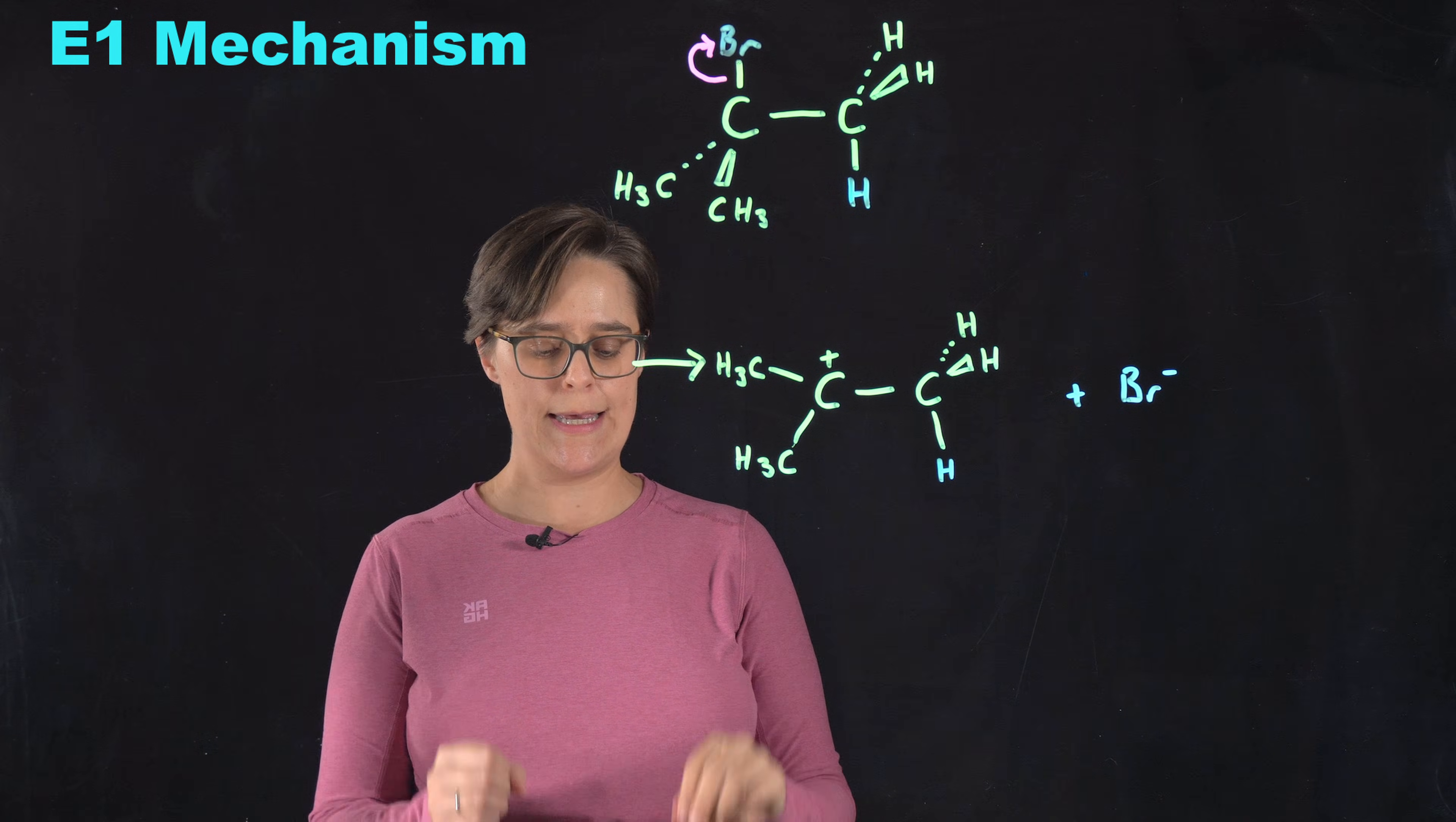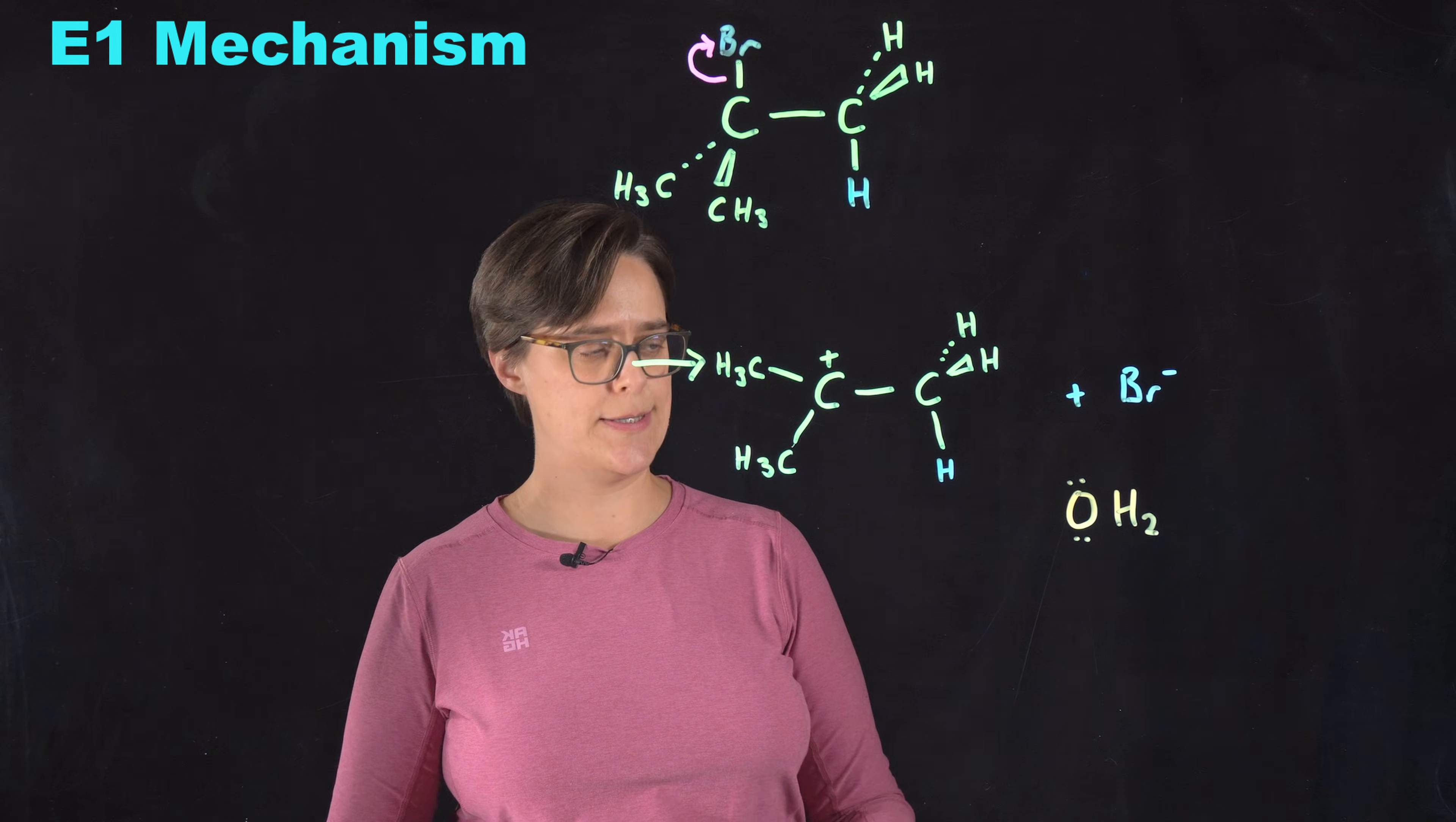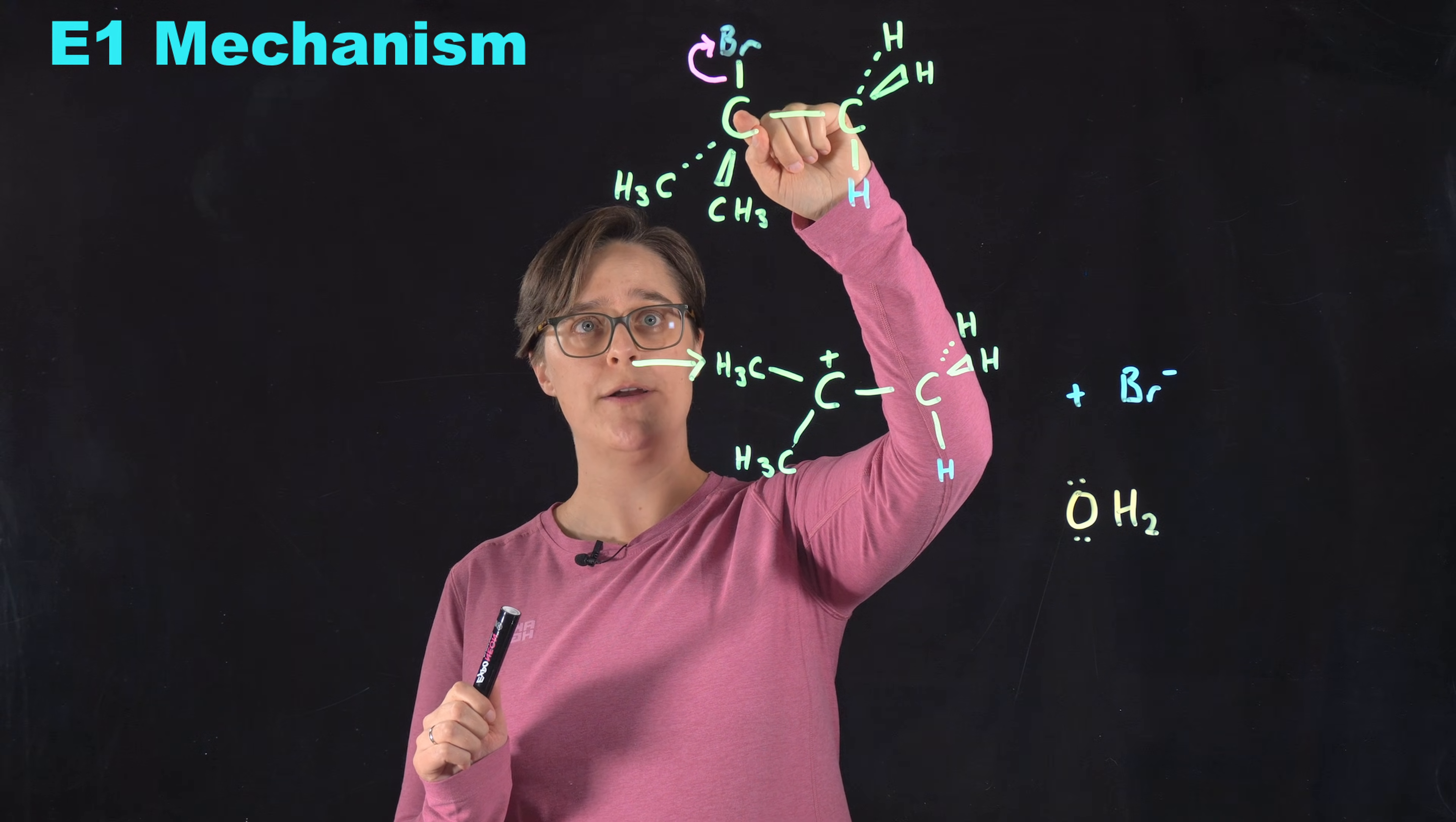Now in this second step it needs to react with a lone pair of electrons on a Lewis base. So I'm just going to use water as an example. But what's going to happen is that a lone pair of electrons from this Lewis base are going to attack a hydrogen on this beta carbon. So remember the carbon that the leaving group is attached to is an alpha carbon. Any carbon directly bonded to this alpha carbon is a beta carbon.